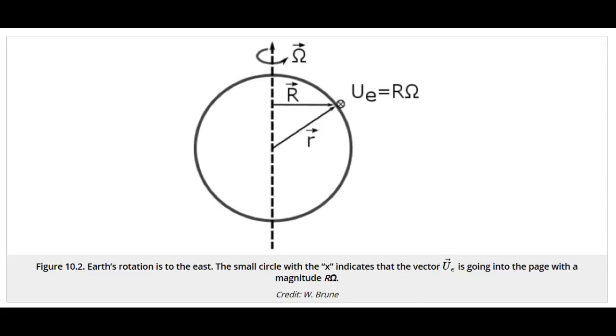U_e is the eastward velocity of the Earth and is pointed into the page. We know that U_e equals r, which is the shortest distance vector between Earth's rotation axis and the point on the surface, times omega, which is Earth's rotation vector.